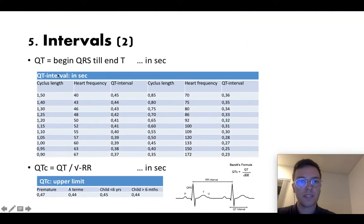Then check QT which is the beginning of QRS till the end of T and note that in seconds. Again I noted the normal values. And check QTc which is QT divided by the square root of RR, and RR interval is the tip of the QRS till the next tip of the QRS. The normal time for example for a child younger than six years would be 0.45 seconds.